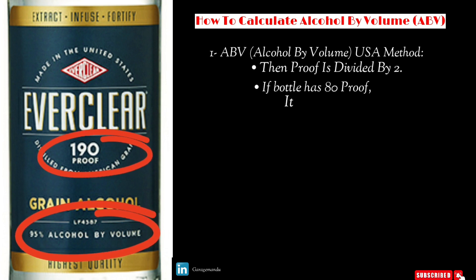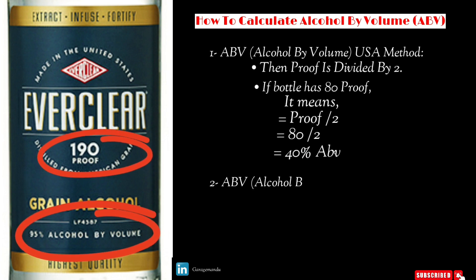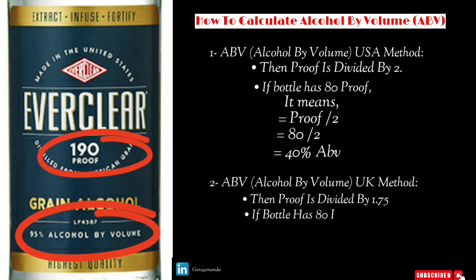In the USA method, if a bottle has 80 proof, it has 40 percent alcohol by volume. In the UK method, proof is divided by 1.75, which means if a bottle has 80 proof, then it has 45.71 percent alcohol by volume.